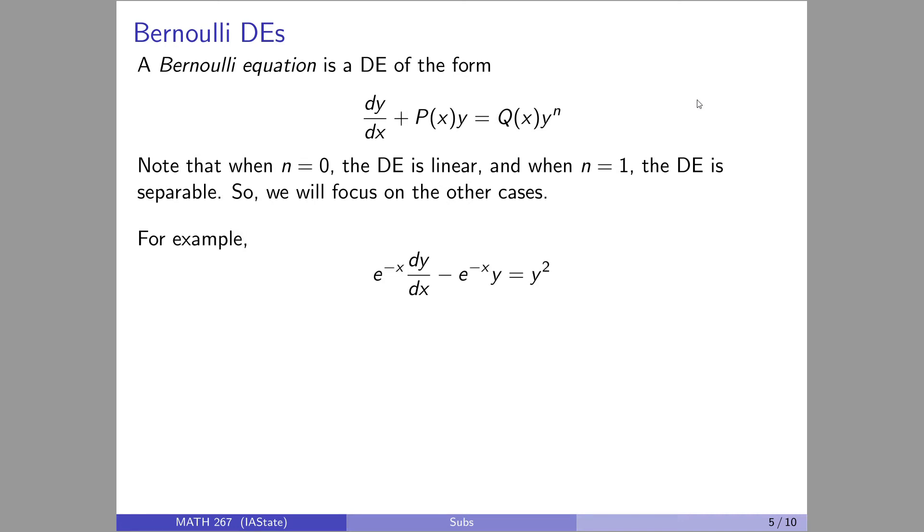But anyway, so Bernoulli DEs are nice first order DEs that can be always substituted when n is not zero and n is not one to be turned into a linear one. So we'll focus on other cases. Let's look at the case when y is being squared over there. The first thing I want to know is this doesn't quite look like the form that I just promised. Note, this is like the standard form of a linear DE with this extra y to the n term. So here, let me multiply everything by e to the x, get into the required form. It looks a little bit more exciting. Now, what would I do here? Well, it's almost linear. It's so close to being linear. This y squared term is the problem. So divide it out.